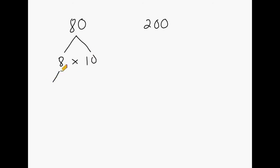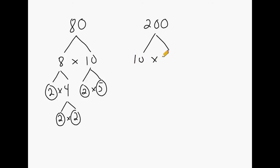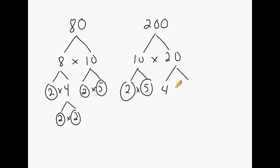The most obvious factor pair for 80 would be 8 times 10. 8 may be broken down into 2 times 4 — we can circle the 2 because that's prime. This 4 may be broken down further into the prime numbers 2 times 2. And 10 may be broken down into the prime numbers 2 and 5. Moving on to the number 200: 200 may be broken down into 10 times 20. 10 may be broken down into the prime numbers 2 times 5. For 20 we may break that down into 4 times 5 — we can circle the 5 because that is prime. And 4 must be broken down into its prime elements of 2 times 2.